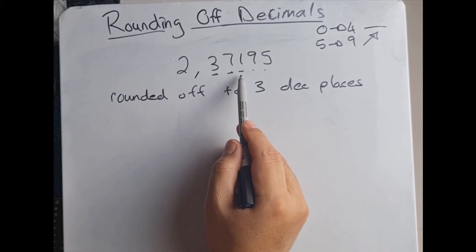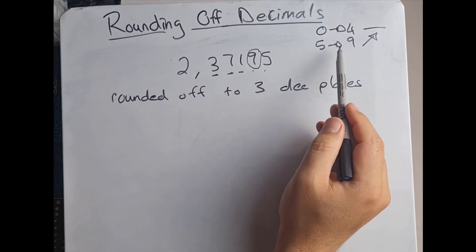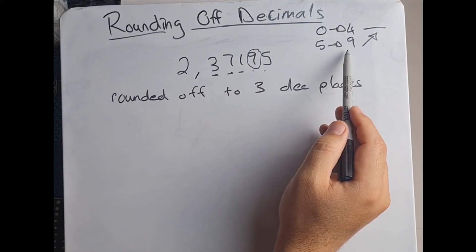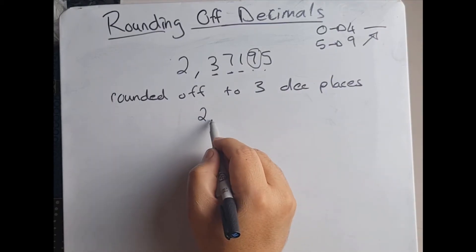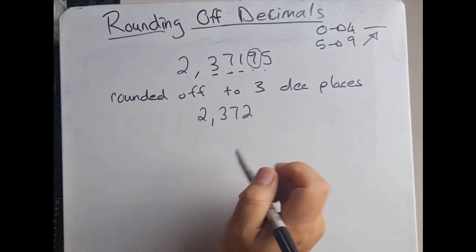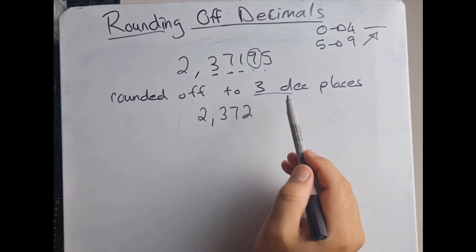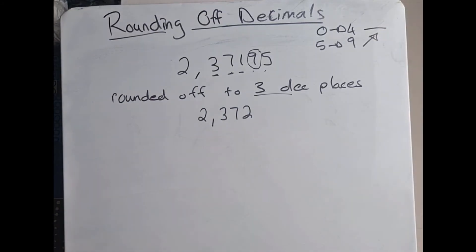We've got 1, 2, 3, that's all they want to see. Do we look at this column over here? No we don't, we look at the neighbor, this one over here. Look at our rules, is it between 5 and 9? Yes, which means this number goes up. Therefore it's 2.372. Have I rounded it? Yes. Have I rounded it to three decimal places? Yes I have.